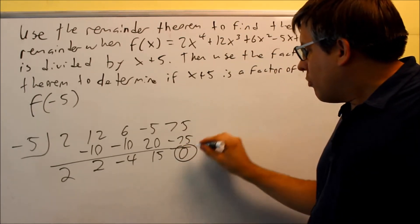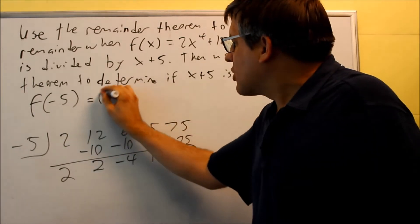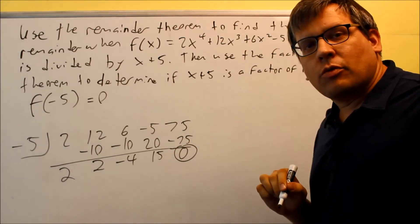What this means right here, the remainder, that means that's what f of negative 5 equals. That's how the remainder theorem works.